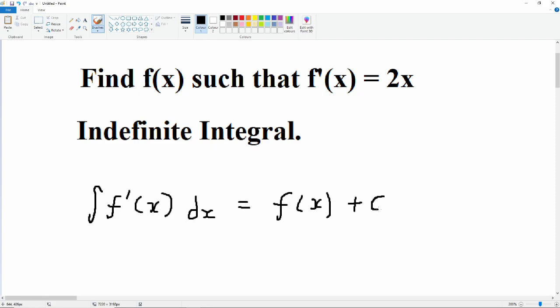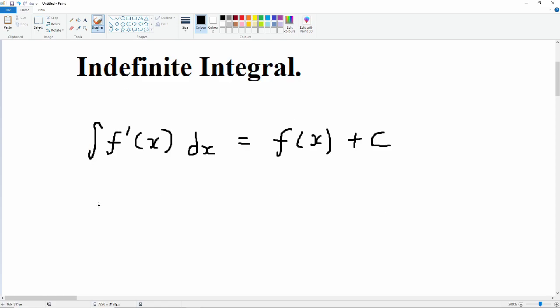We have to always remember that there's a constant. When we take the derivative, we lose the constant. So information has been lost. So we have to use this plus c to show that there are an infinite number of functions that could have the same derivative. Okay.